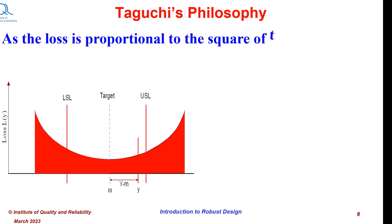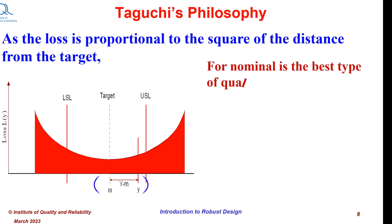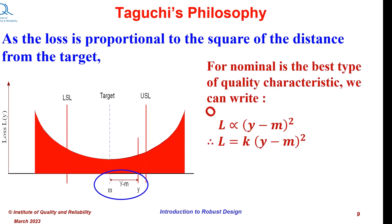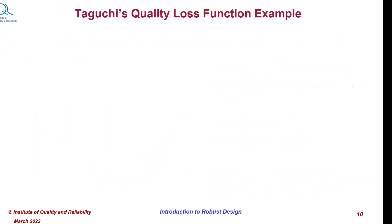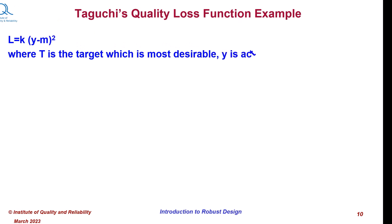This loss is shown in red color in the following figure. As the loss is proportional to the square of the distance from the target, for the nominal-is-best type of quality characteristic, we can write loss L is proportional to (y − m)², and therefore loss can be equated to k(y − m)², where k is the constant of proportionality. Observe that the loss function is parabolic.